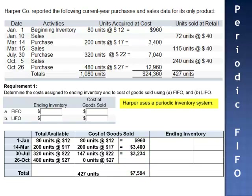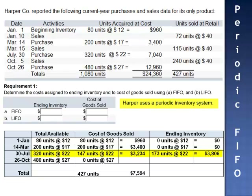The remaining units are left in ending inventory. None of the units from beginning inventory, none of the units from the March 14th purchase. But of the 320 units, since only 147 units were expensed, the remaining 173 units are still in ending inventory. At $22 per unit, the value of those units is $3,806.